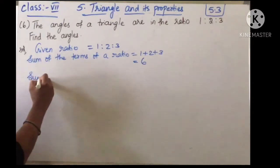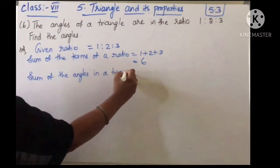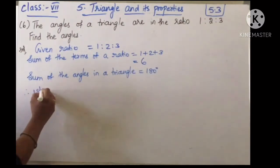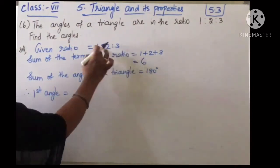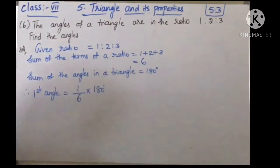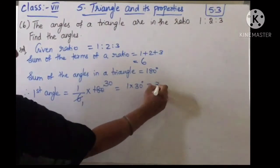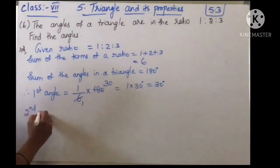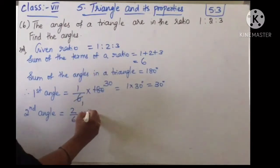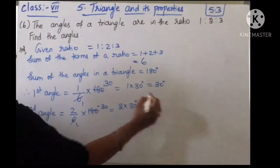The sum of the angles in a triangle is 180 degrees. To find the first angle: the first ratio is 1, so 1/6 into 180 = 30 degrees. For the second angle: 2/6 into 180 = 60 degrees.